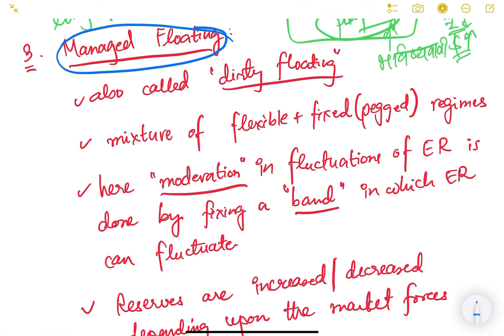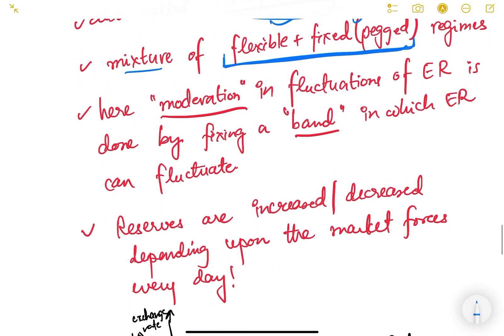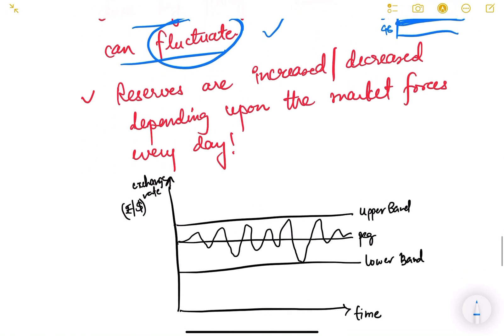The third type of system is managed floating, also known as dirty floating. It is a mixture of the flexible and fixed/pegged regimes. Here, RBI says the exchange rate will remain at a particular level, but day-to-day fluctuations are allowed within a defined band — for example, if the peg is 50 rupees per dollar, fluctuations between 48 and 52 rupees may be allowed. This is why it is called managed floating — the exchange rate is allowed to float within a managed band.